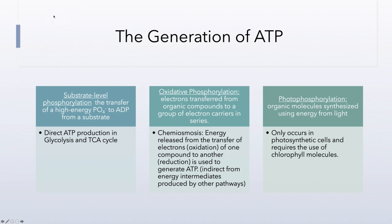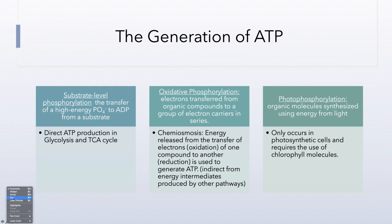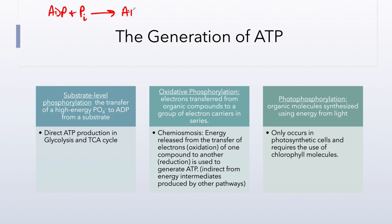Remember that ADP — adenosine diphosphate — plus a free phosphate group (that's what P-sub-i means) results in an ATP, adenosine triphosphate molecule. When this phosphate group gets transferred to ADP, it is being transferred from one of the intermediates within the pathway. This is a direct form of ATP production and it occurs during glycolysis and the TCA or Krebs cycle.